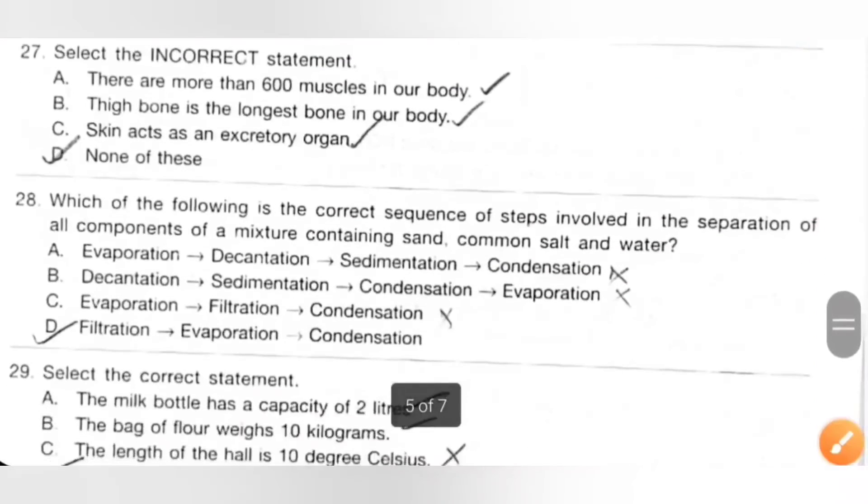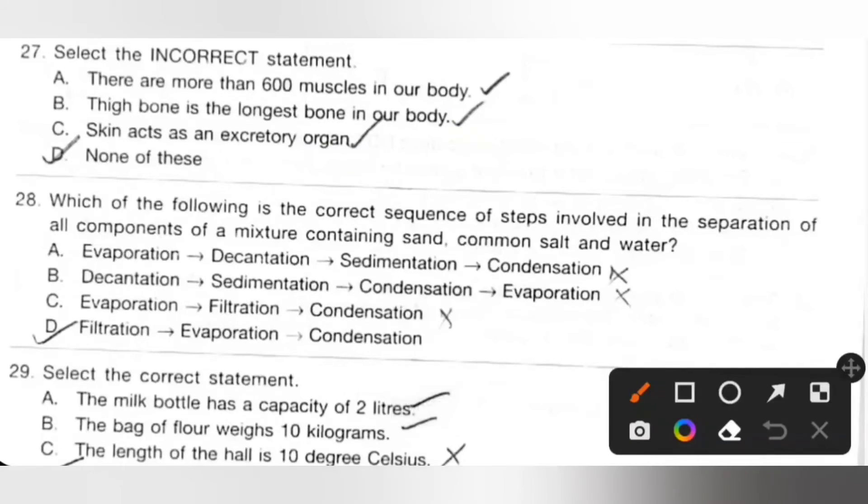Twenty-seventh: Select the incorrect statement. Option A: There are more than 600 muscles in our body, it is the true statement. B: Thigh bone is the longest bone in our body, it is also true. C: Skin acts as an excretory organ, it is also true statement. So the incorrect statement is none of these. So option D is the correct answer.